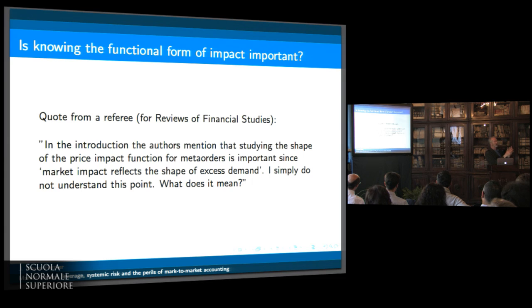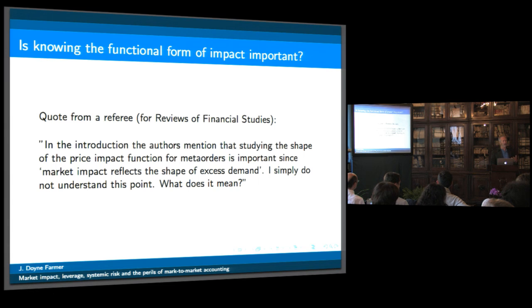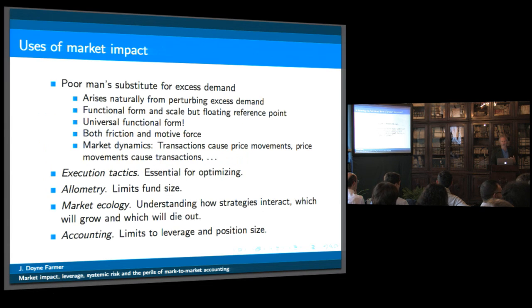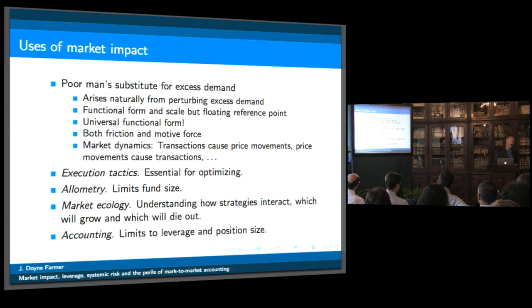This is, to me, a testament of how far removed economics has gotten from finance. Finance people think about this in informational terms and say this is a statement about the information in the market. Economists might think about this in supply and demand terms — this is a substitute for excess demand. If you just perturb excess demand you can ask: if somebody enters with some more demand, how does that affect the price? I argue that's what market impact is about.